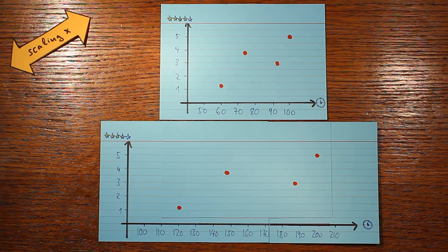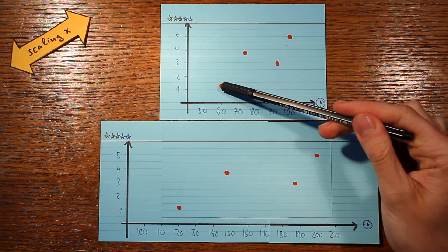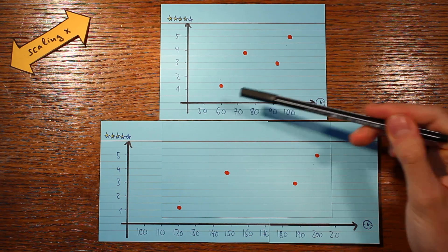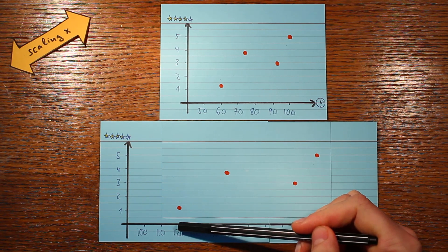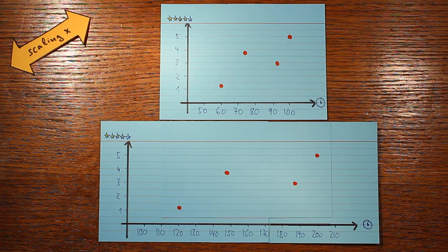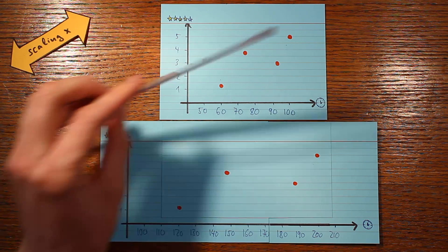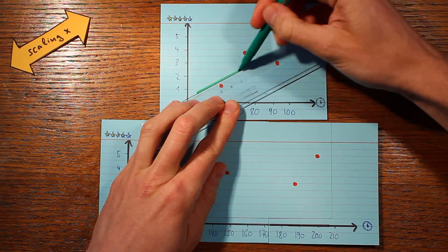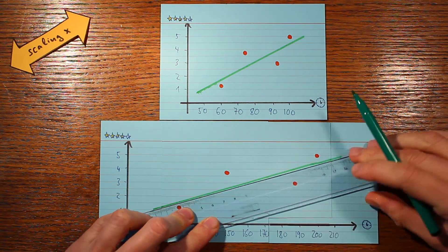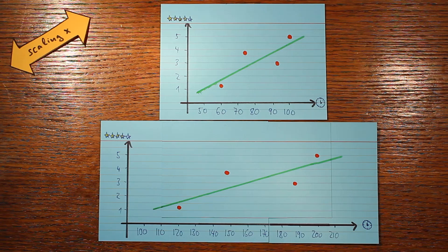Here are two scatter plots. In the second one, I've changed the x values — I've multiplied them by two. So the movie that in the first data set used to be 60 minutes long is now 120 minutes long, and so on. The question is: which of these two plots has the larger correlation coefficient? Let's go through our three steps. The first is to fit the straight lines, and of course they are really different — the second slope is just half as steep as the first one.